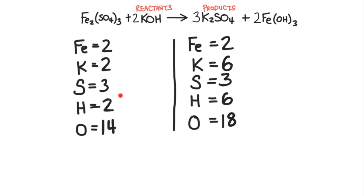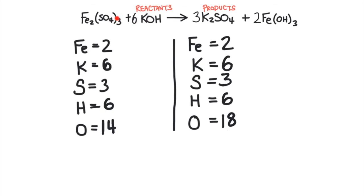So sulfur is balanced, but notice one of our metals just became unbalanced. So I'm going to go back to step one and balance the metals. There are now six potassium atoms on this side of the equation and only two on the other side. So I'm going to change this coefficient from a two to a six. This now gives us six potassium atoms, six hydrogen atoms, and six oxygen atoms, plus the 12 oxygen atoms in this other compound for a total of 18 oxygen atoms.